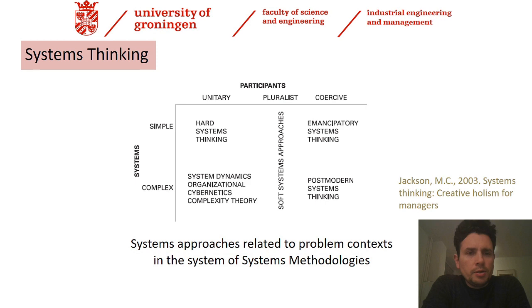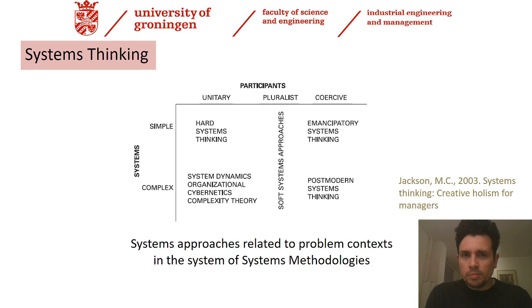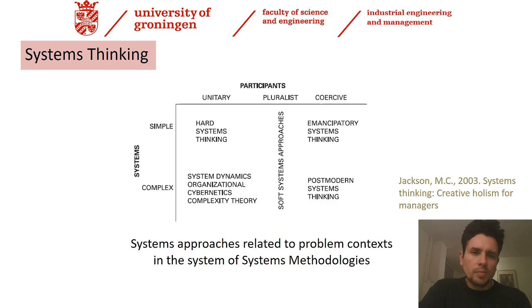This graph proposed by Jackson is particularly interesting for understanding how to allocate the problem to be solved and its context within a system. We have systems versus participants. If the points of view of the participants — not only researchers but also stakeholders, people with high interests who define specific technical requirements — are common and there is no pluralism, then we talk about a unitary set of participants. If the project is also highly simple, with no complexity or multidisciplinary fields, then we talk about hard systems thinking — for instance, the TVL1 project on the thalamus as a controller for different regions of the brain.